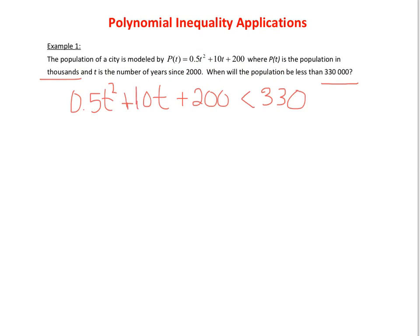Okay, so just like we did with all of our inequalities algebraically, we're going to move everything to one side and simplify. We're going to get 0.5t squared plus 10t, and then you can see we're going to get minus 130 is less than 0.